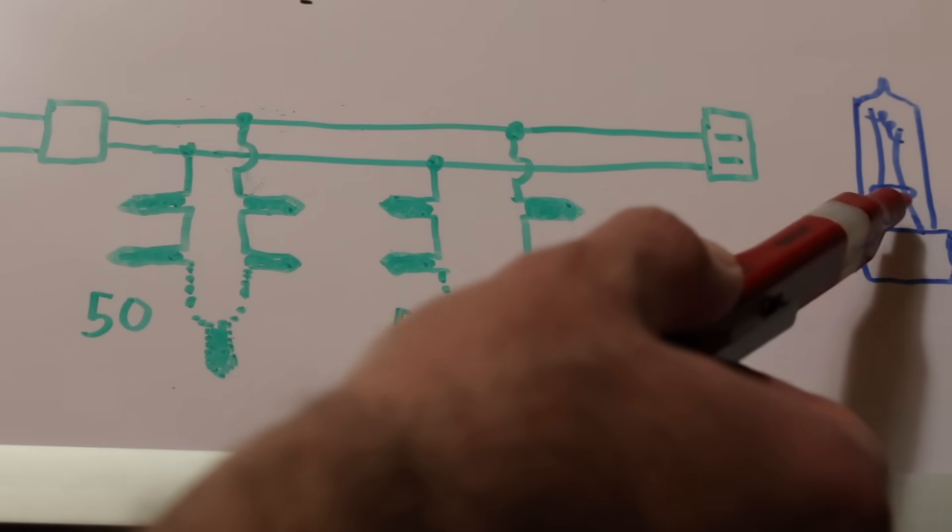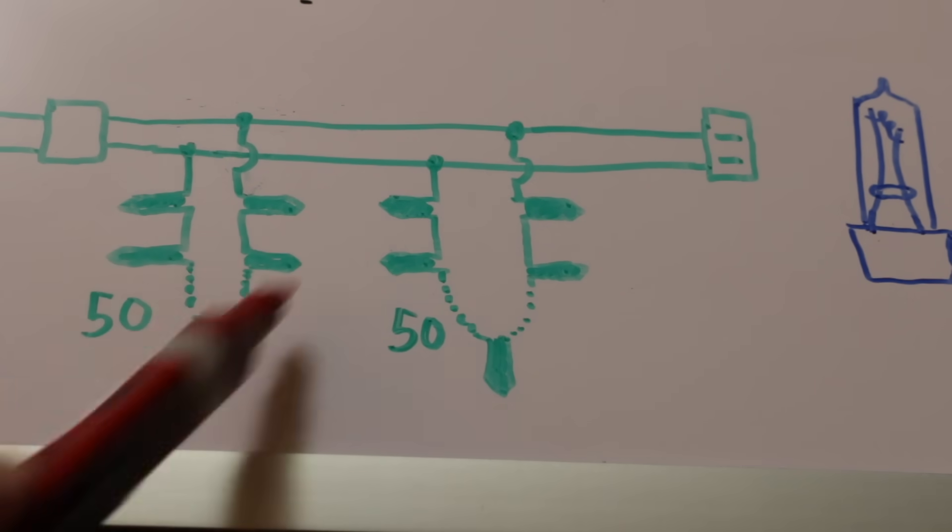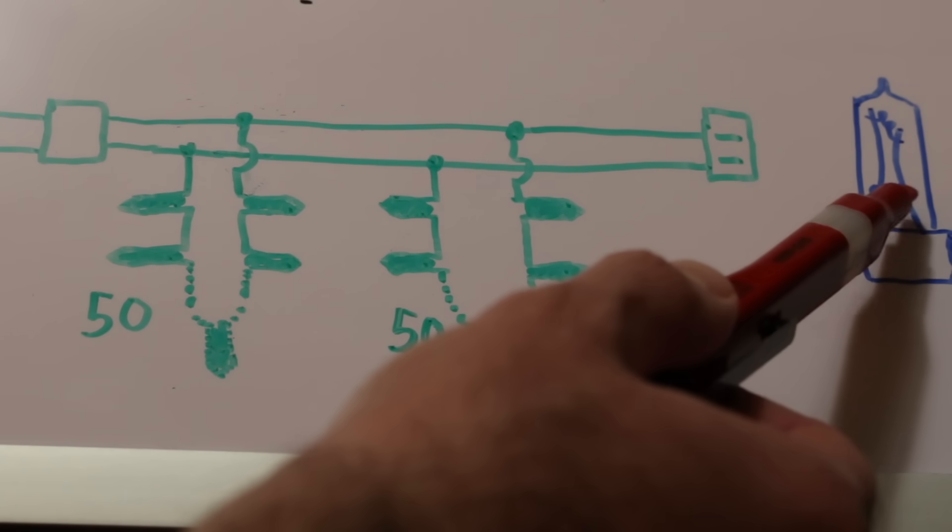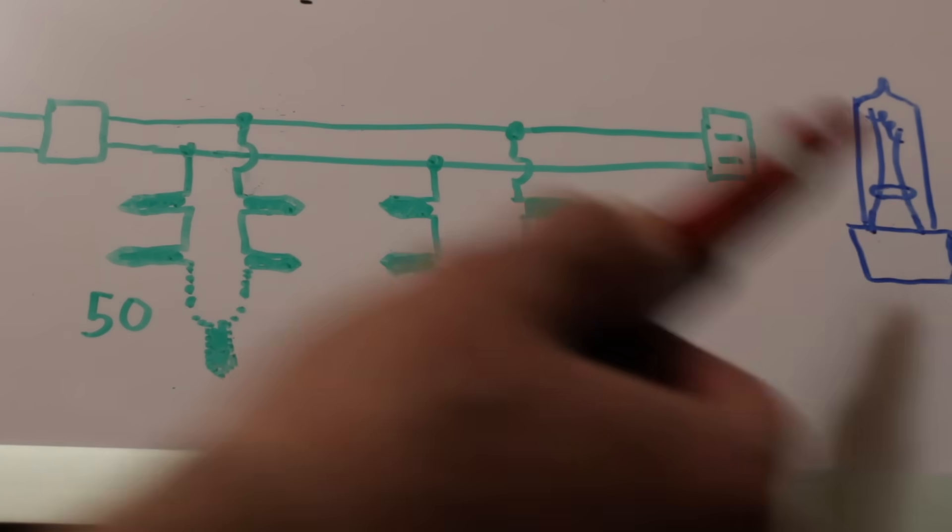But if the shunt fails to take over, this bulb creates a complete break in the path, and that's when all the lights go out. Sometimes we can fix this, like with a Lightkeeper Pro, and other times there's just nothing we can do, and we just have to find the dead bulb and replace it.